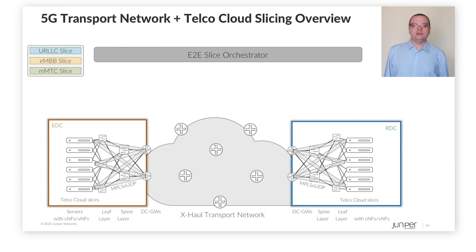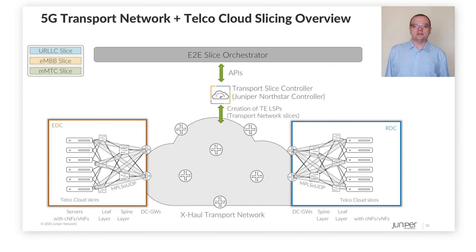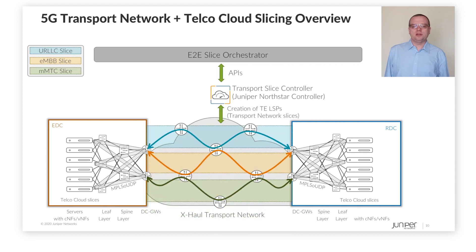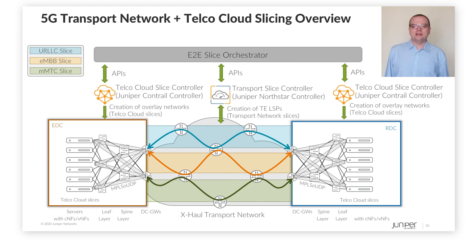Let us have a closer look at how slice creation works. The end-to-end slice orchestrator issues requests over APIs to the Transport Domain Slice Controller — which is the Juniper NorthStar Controller in this demo — to create transport network slices. Juniper NorthStar Controller programs appropriate slice-specific LSPs fulfilling slice requirements provided by the end-to-end slice orchestrator. Similarly, the end-to-end slice orchestrator issues requests over APIs to the Telco Cloud Slice Controller — which is the Juniper Contrail Controller in this demo — to create slices in the telco cloud spanning multiple data center locations. Juniper Contrail Controller programs appropriate slice-specific overlay virtual networks over the computes in the data centers, to facilitate isolation between telco cloud slices.